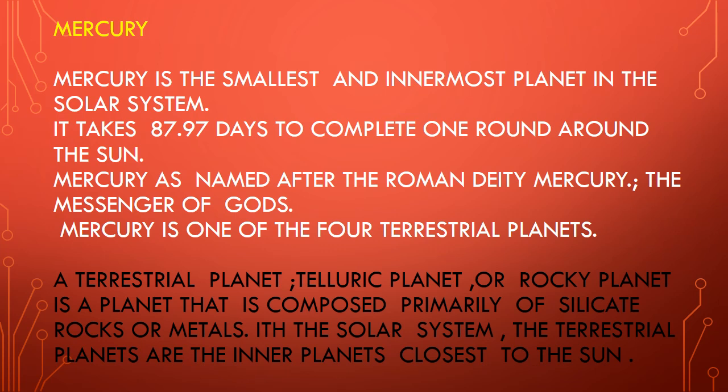Mercury is named after the Roman deity, the Messenger of God. Mercury is one of the four terrestrial planets. Also, Mercury has a name shared with a metal whose symbol is Hg, and this is a liquid metal — the only metal that is liquid at room temperature.